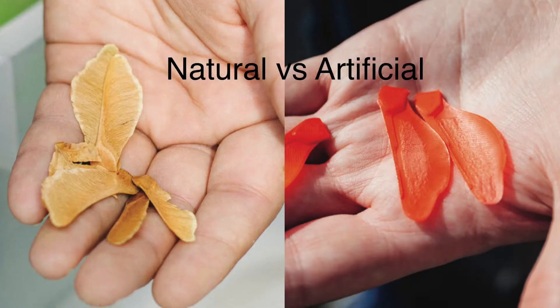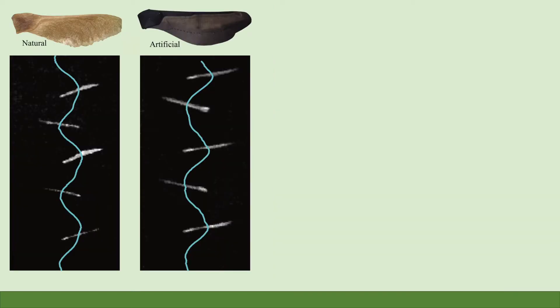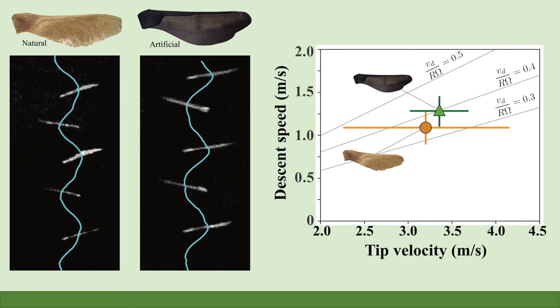These artificial samaras were designed to match the dimensions, shape, and weight distribution of natural maple samaras. We conducted indoor drop tests of both natural and artificial samaras to quantify their descent speed and rotation when no wind was present.